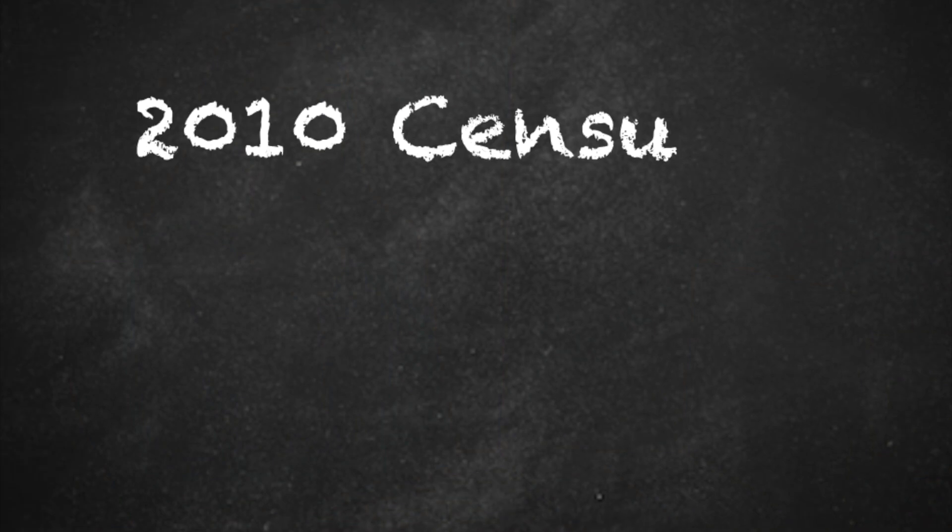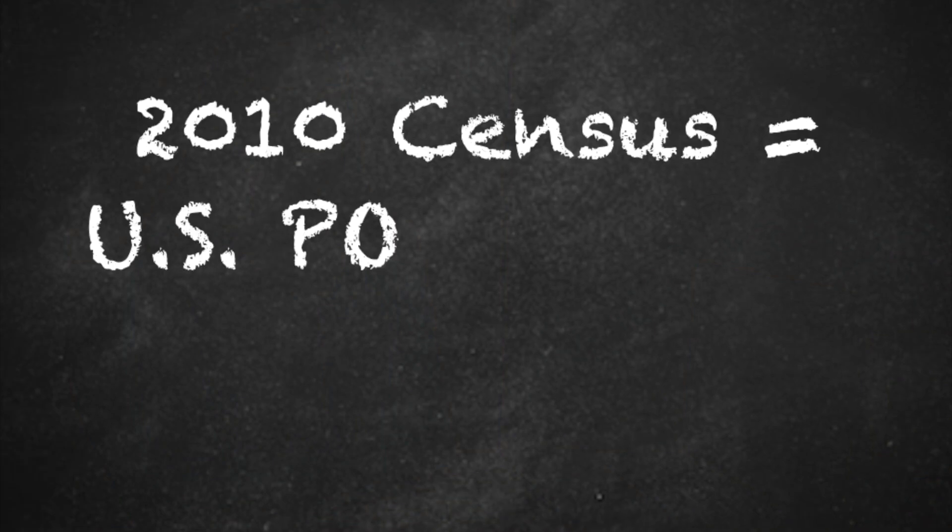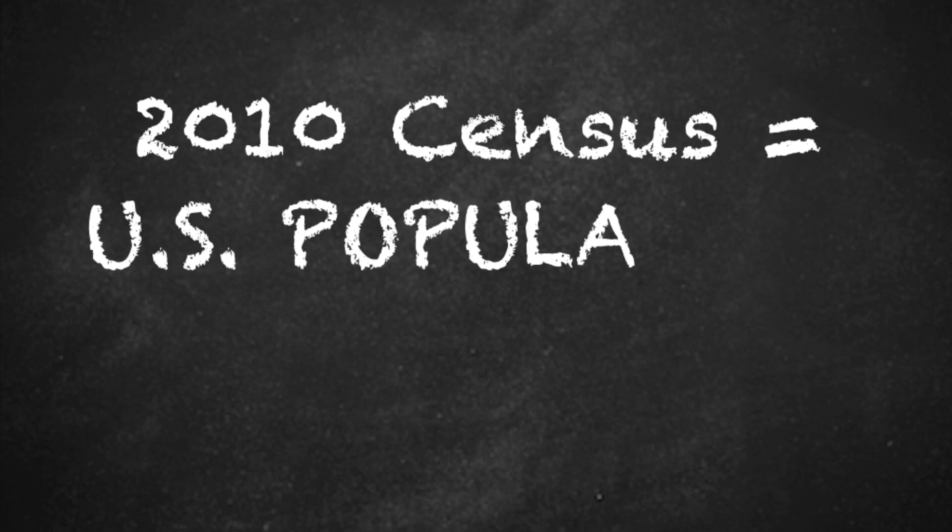Estimating a population is like doing a simple math equation. Let me show you how that works. We start with the population at the last census and then adjust that population to account for changes that have occurred.